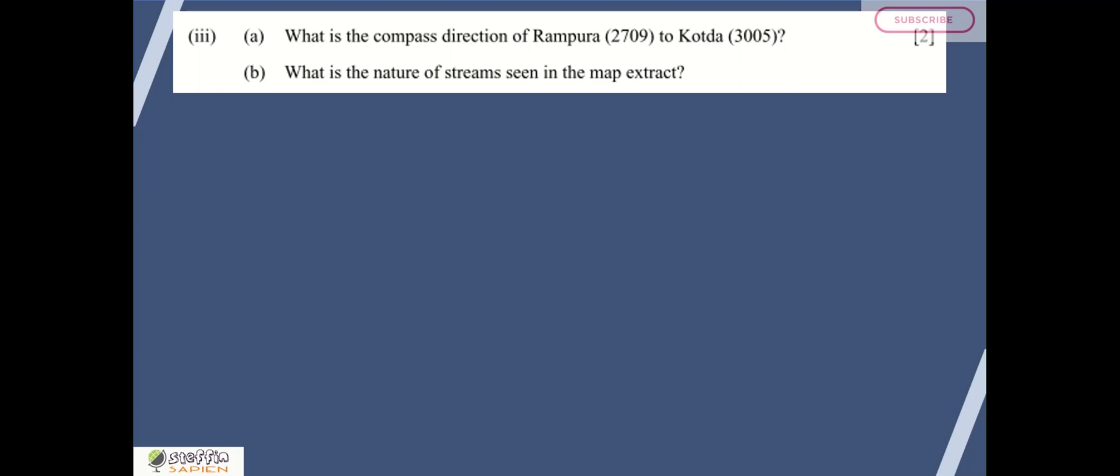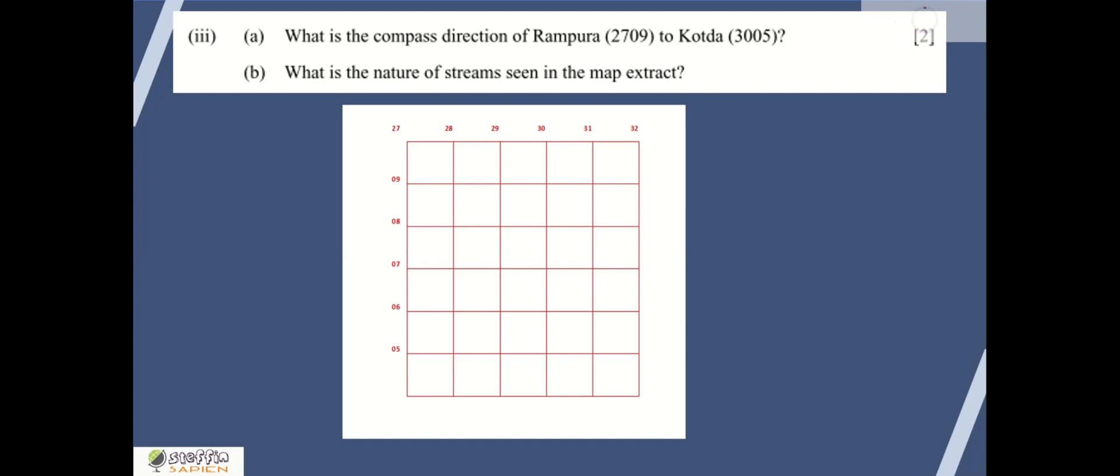What is the compass direction of Rampura to Kota? The four-figure grid reference of both places are given. Rampura is located in 2709, Kota is located in 3005. The question is the direction of Rampura to Kota. Let's imagine that we are standing in Rampura and looking to Kota. Simply place a compass on Rampura and see the direction in which the Kota is located. The answer is southeast. Kota is in the southeast direction from Rampura.